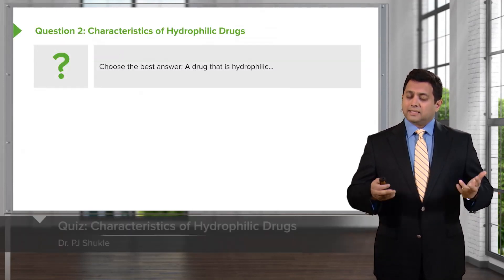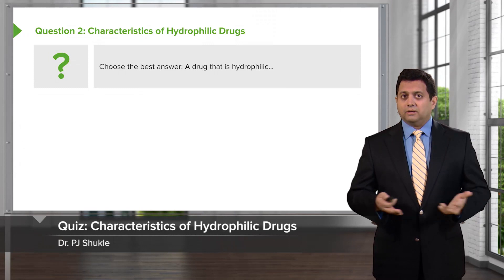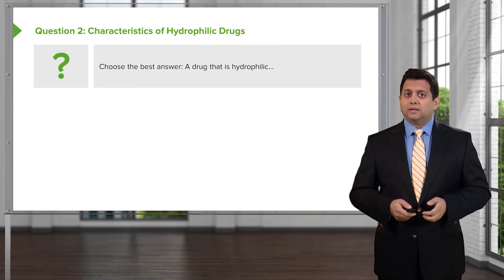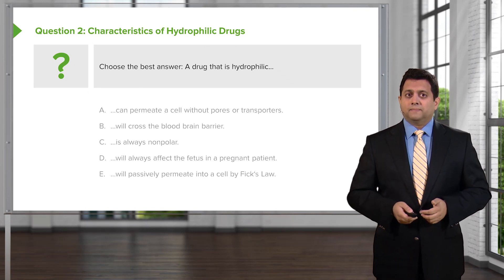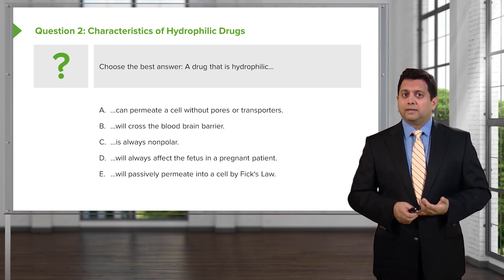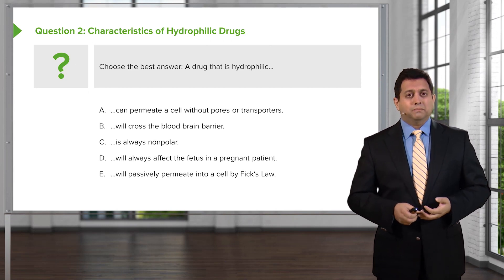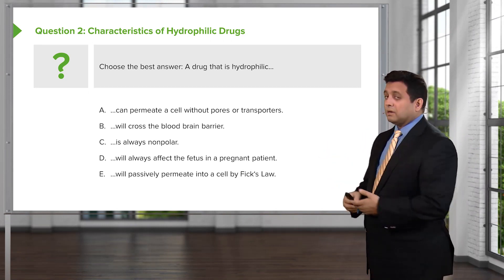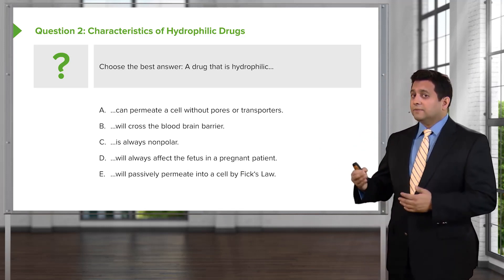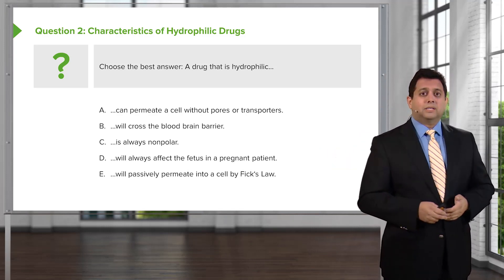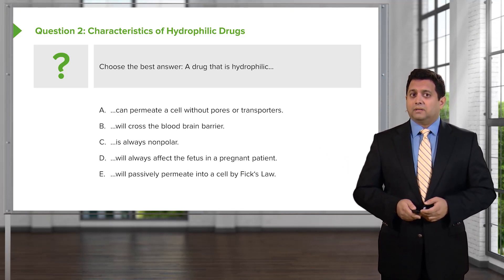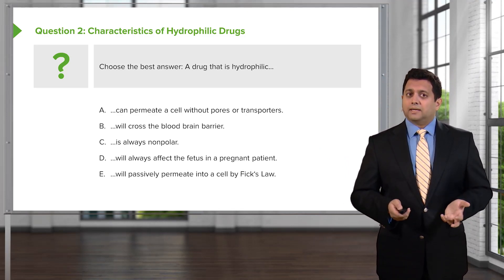Let's apply this information to drugs. Choose the best answer for a drug that is hydrophilic. A: can permeate a cell without pores or transporters. B: will cross the blood-brain barrier. C: is always nonpolar. D: will always affect the fetus in a pregnant patient. E: will passively permeate into a cell by Fick's law. Which one is correct?